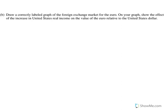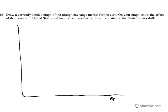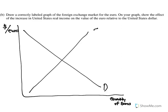On to letter B. Letter B says to draw the foreign exchange market for the euro, and on your graph show the effect of the increase in the United States' real income on the value of the euro relative to the United States dollar. Let's go ahead and draw that graph — we can make it nice and big. We'll put quantity of euros on the horizontal axis, dollars per euro on the vertical axis, and then draw the demand and supply for the euro.